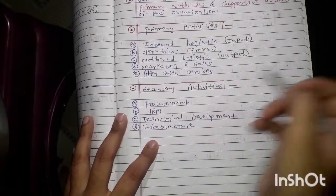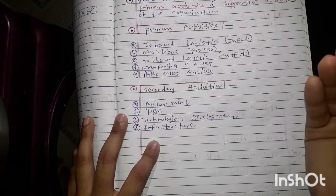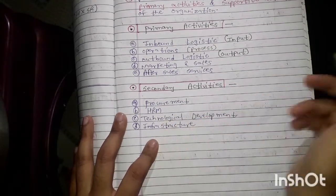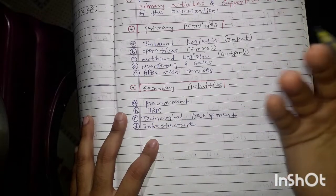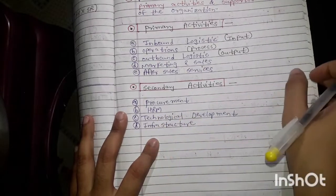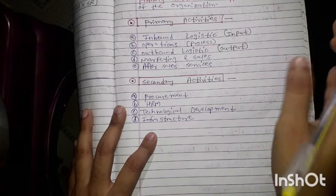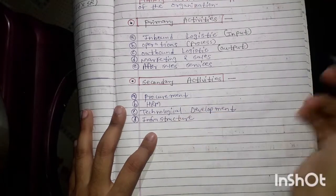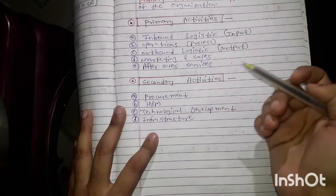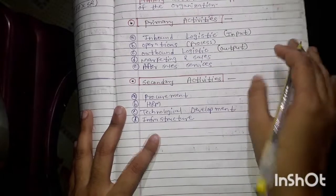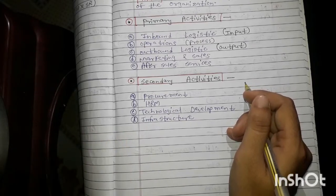After primary activities, we will understand the secondary activities of the organization. That is: procurement — meaning we order material from suppliers; HRM, that is human resource management — managing employees and their problems; next, technological development — developing the technology we use; and last, infrastructure — improving our infrastructural facilities, which has an impact on production. All these things will help the organization to give better products or services to its customers.